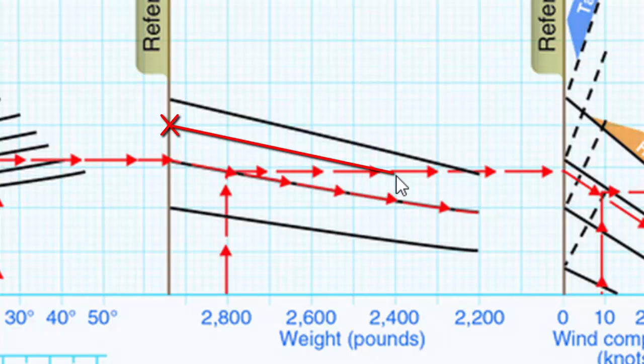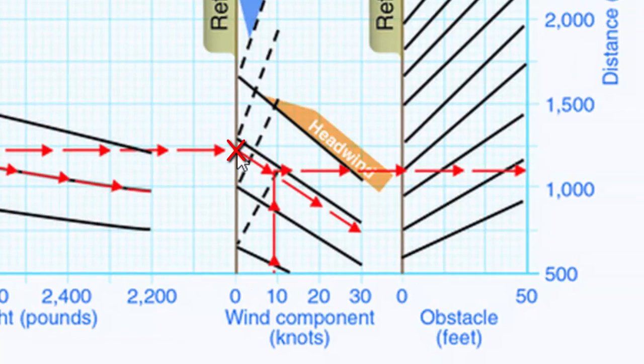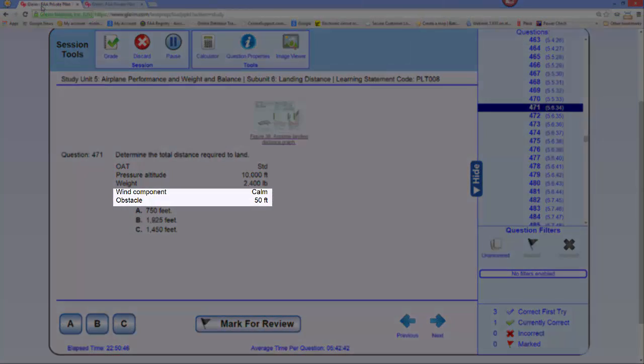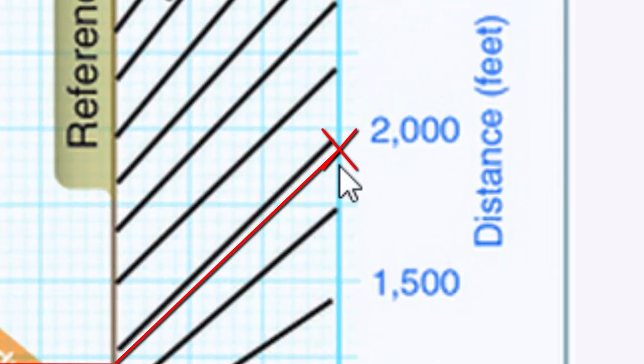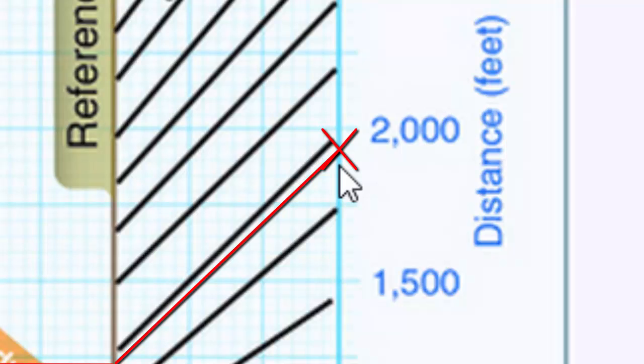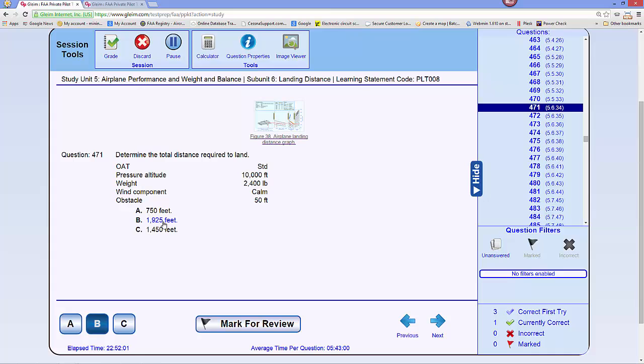From that point, we go straight across to the next spot. We follow this either up or down depending on whether we have a headwind or tailwind. The wind is calm, and we have a 50-foot obstacle. Since winds are calm, we can go straight across. For the 50-foot obstacle, we follow this line until we get to 50 feet right here. The answer is 1,940 feet distance required, which is closest to 1,925, so I'm going to pick that.